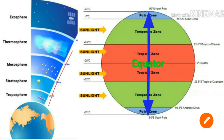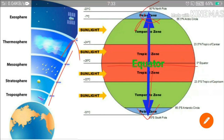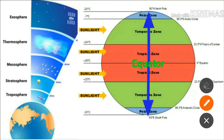As we go up from sea level, the temperature of the air decreases. The temperature also decreases from the equator towards both poles — the north pole and the south pole. That way, by both poles, the temperature decreases.